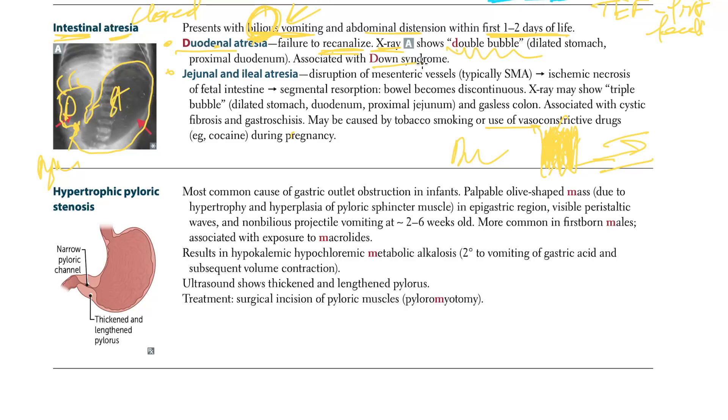Duodenal atresia is associated with Down syndrome — 3 D's: duodenum, double bubble, Down syndrome.